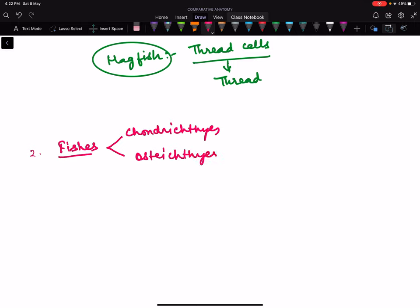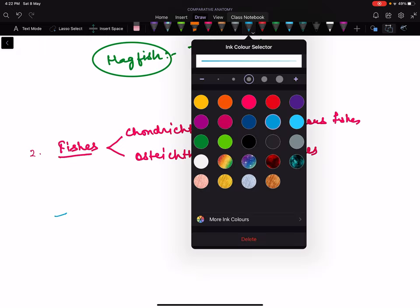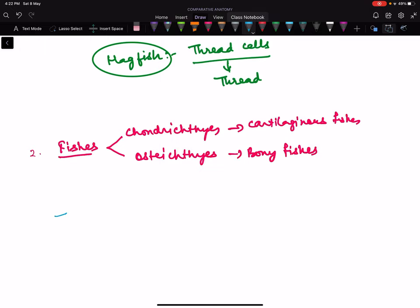Chondrichthyes and Osteichthyes. Chondrichthyes are also called cartilaginous fishes, and the others are bony fishes based on their skeleton type.